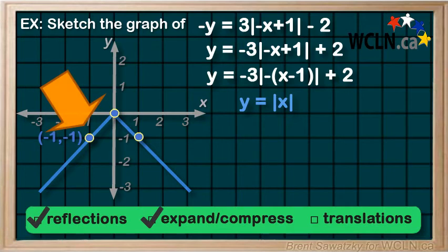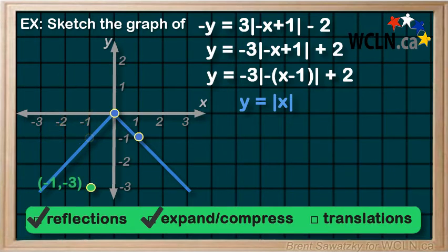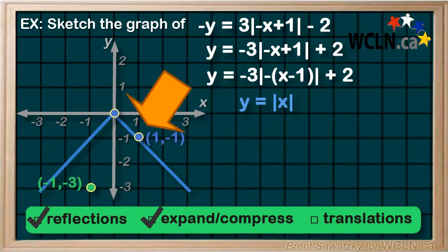This one, negative 1, negative 1. We multiply the y value by 3 and we get negative 1, negative 3. 1, negative 1. We multiply the y value by 3 and we get 1, negative 3.